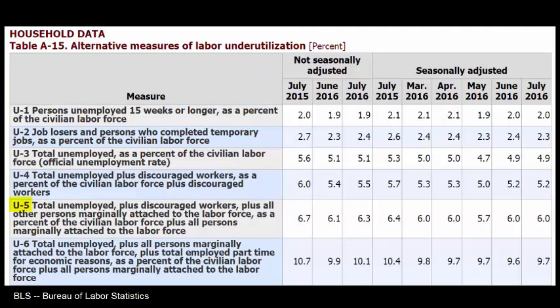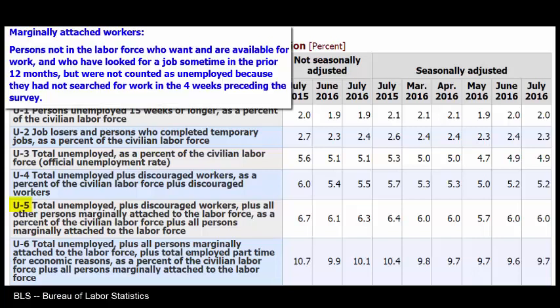U5 is U4 plus all other persons marginally attached to the labor force. To be marginally attached, these are persons not in the labor force who want or are available for work and who have looked for a job sometime in the prior 12 months, but were not counted as unemployed because they had not searched for work in the four weeks preceding the survey. In July 2015, it was 6.7%; in July 2016, 6.0%.